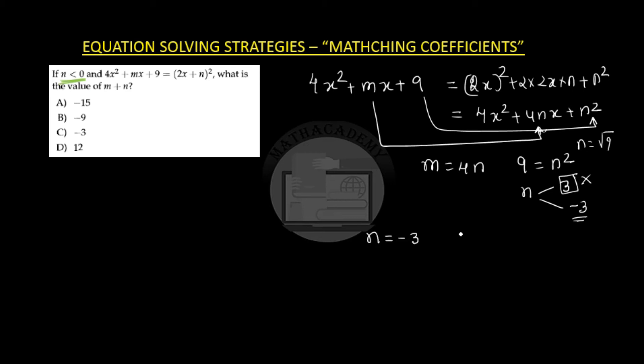If n is negative 3 then m is 4 times negative 3 which is negative 12 and we are asked the value of m plus n which comes as negative 15. Negative 12 plus negative 3 is negative 15.